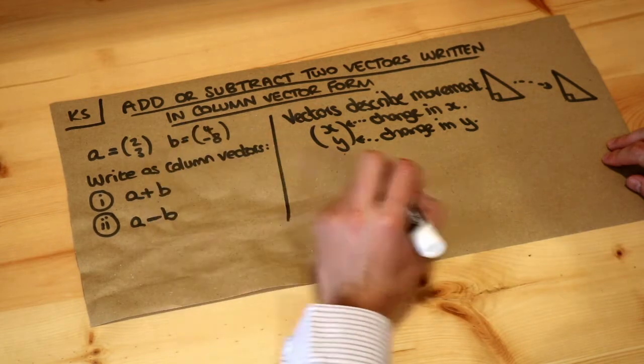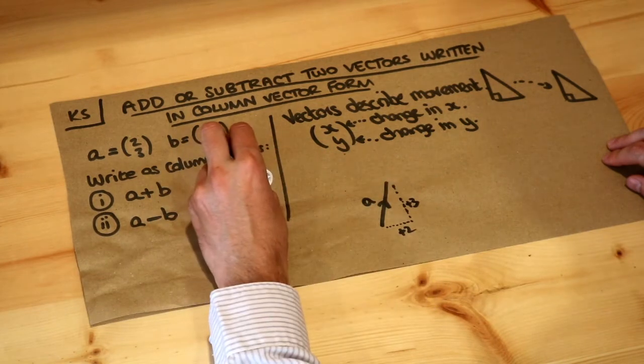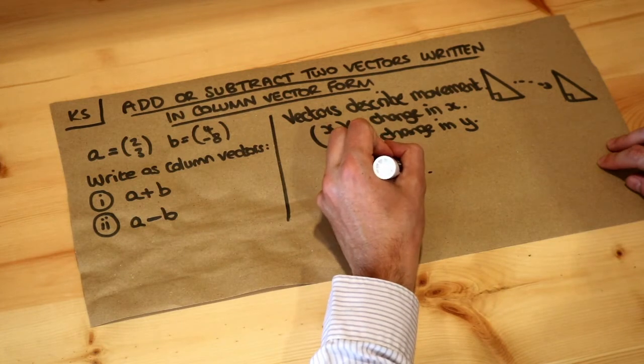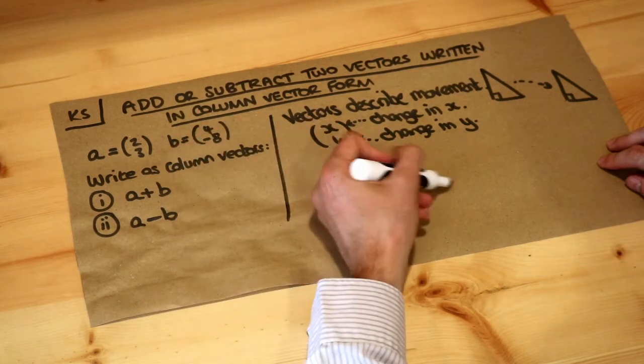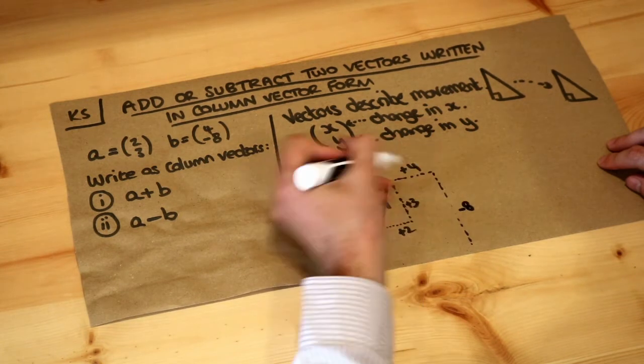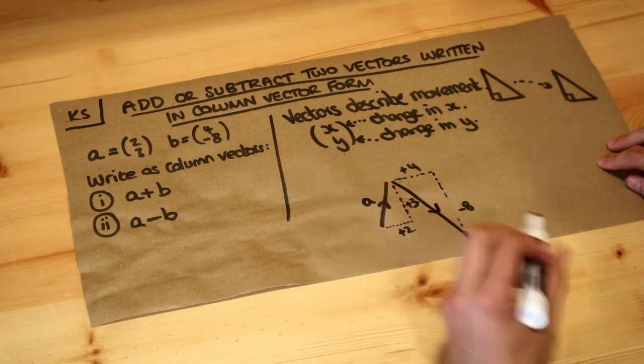And then if we did vector (4, -8) for b, that means the x value is increasing by 4 and the y value is decreasing by 8. So it's going to go all the way down like this and b is going to be in this direction.